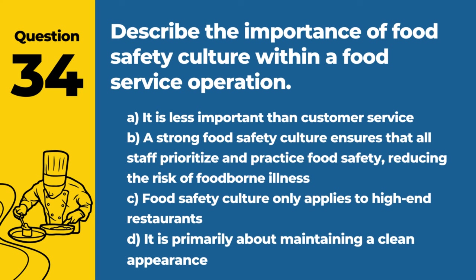Question 41. How should a food service operation manage employee health and hygiene? Answer: B. Implementing policies that require employees to report illness and exclude them from work if they are symptomatic. This ensures that illnesses, especially those that can be transmitted through food, do not spread to customers or other staff members.